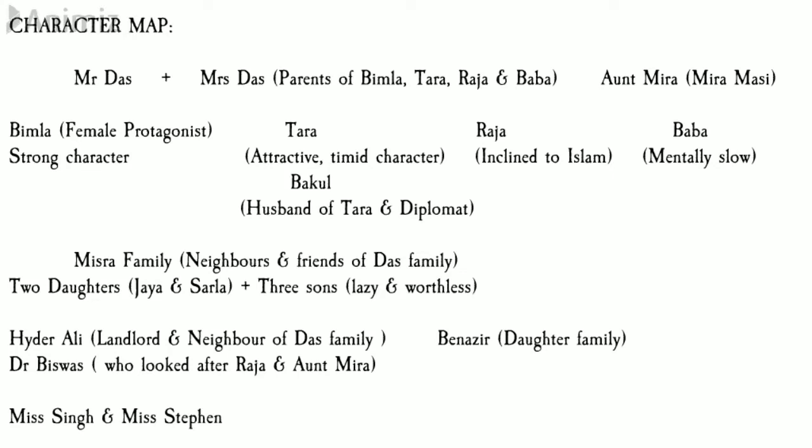Then we have the Mishra sisters — Jaya and Sarla. The Mishra family were neighbors to the Das family. There were also three Mishra brothers, all of them lazy and unemployed — not very important from an examination perspective — but the Mishra sisters Jaya and Sarla are important because they were very close to the Das family. Then there is Mr. Mishra, again not very important from the examination perspective.